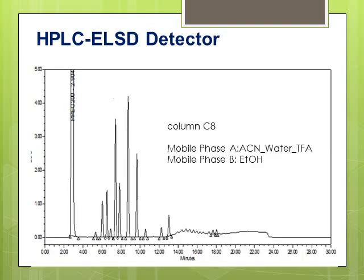This is another chromatogram from a different product using HPLC with an ELSD detector. The PEG 200 appears as a large peak at three minutes. This particular product contains a lot of excipients, and they all elute after four minutes, so none of them are interfering with the peak of interest, which is PEG 200.